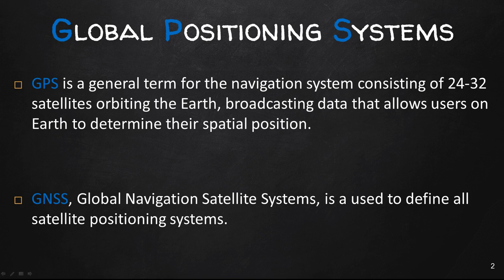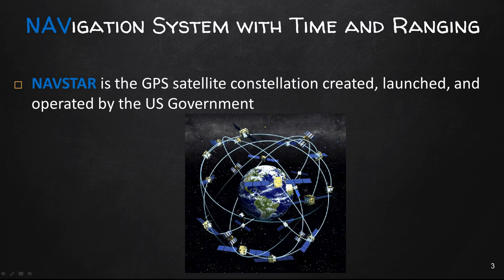NAVSTAR, which stands for Navigation System with Timing and Ranging, is the GPS satellite constellation created, launched, and operated by the US government. That's the formal name — NAVSTAR. It is used for both military and civilian use. There are 24 satellites and six spares; they operate 24 hours a day in all weather. Satellites orbit the earth every 12 hours, sending a synchronized signal from each individual satellite. There are 24 satellites in six orbital planes, equating to four satellites in each orbital plane, as we can see in the drawing on the screen. They provide accurate positioning, navigation, and timing.